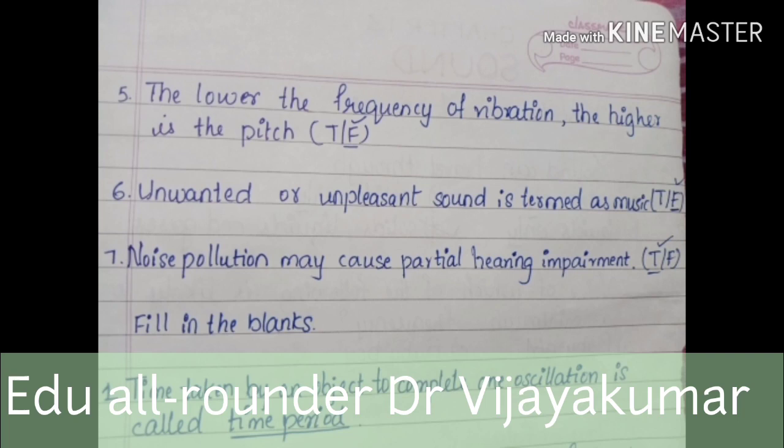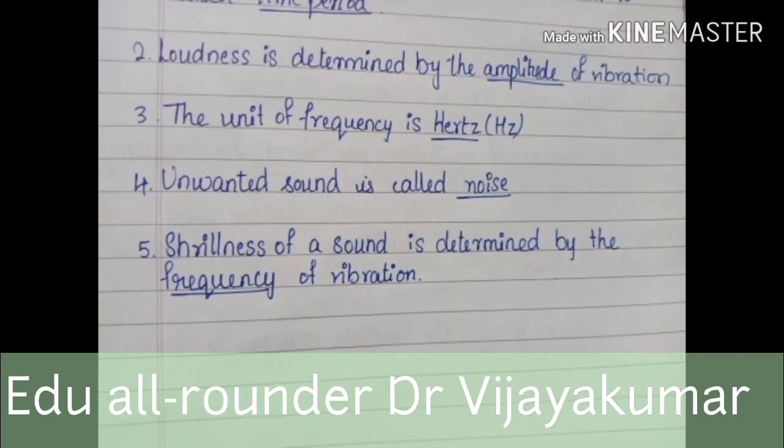Time taken by an object to complete one oscillation is called time period. Loudness is determined by the amplitude of vibration. The unit of frequency is hertz. Unwanted sound is called noise. Shrillness of sound is determined by the frequency of vibration.